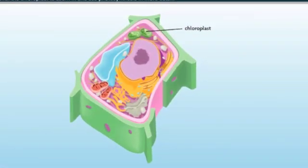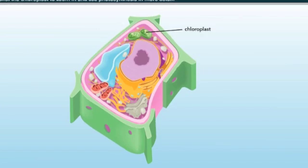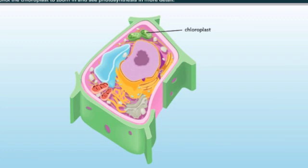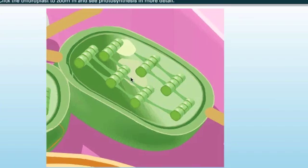Photosynthesis is the process that captures energy from sunlight to make sugars that store chemical energy. Photosynthesis uses sunlight, water, and carbon dioxide to make six carbon simple sugar. Oxygen is released as a waste product. In many photosynthetic organisms, photosynthesis takes place in chloroplasts. Let's go ahead and take a look at chloroplast.